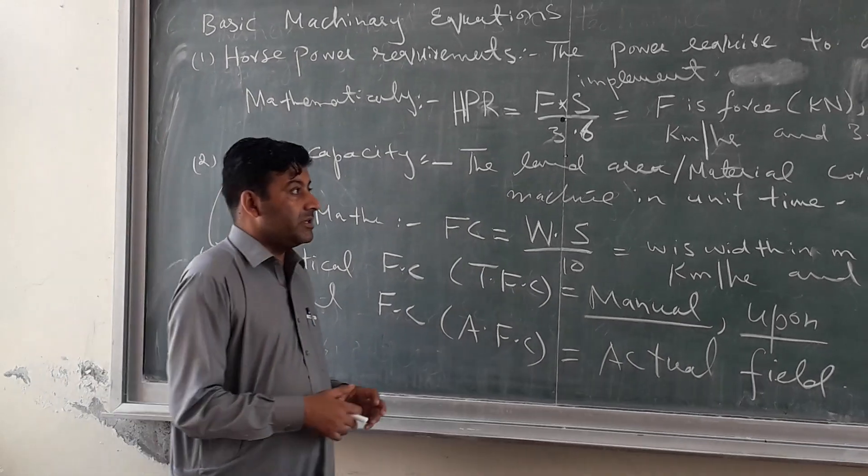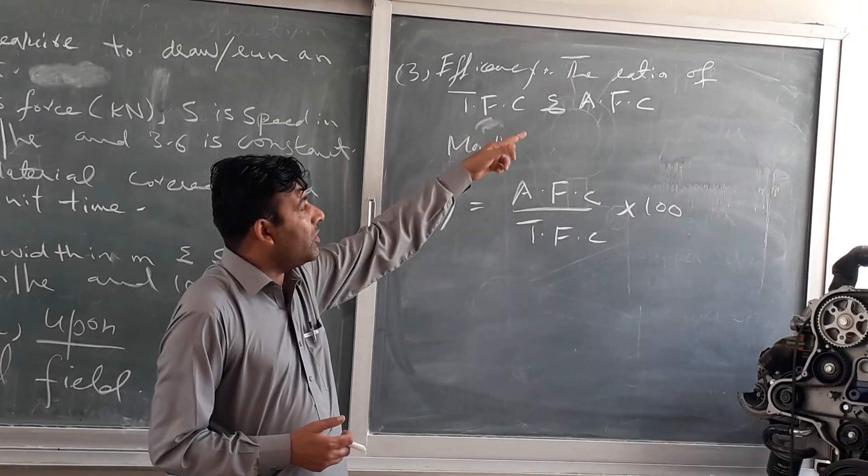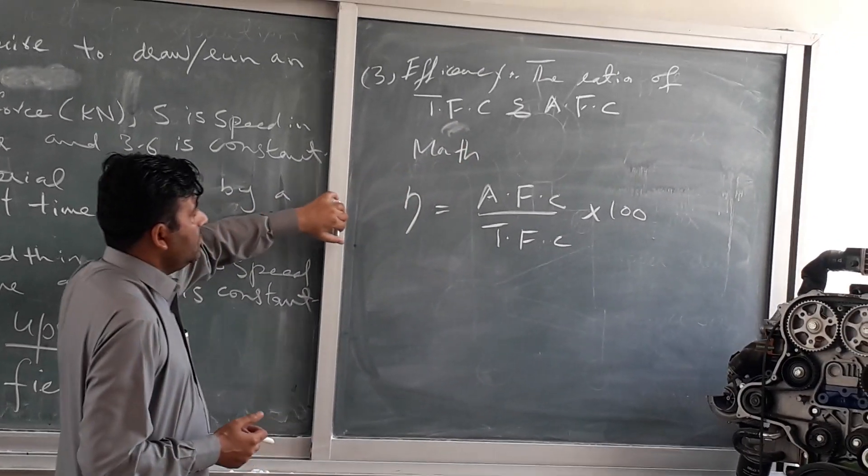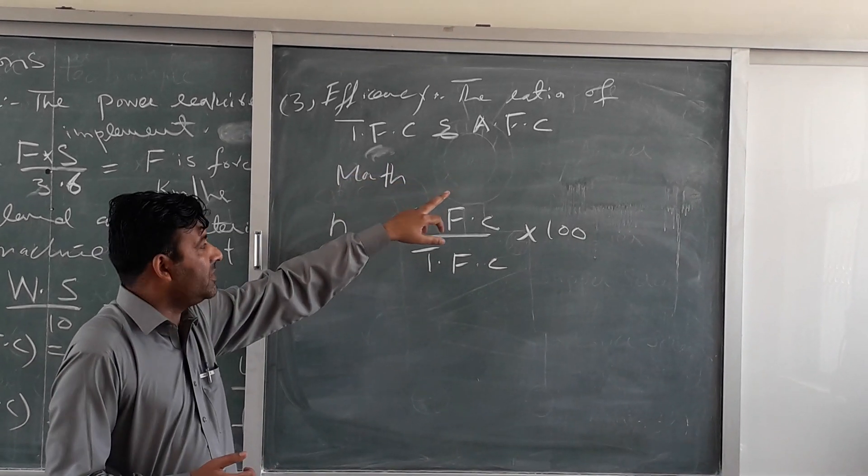The third equation is efficiency of the machine. So what is efficiency? It is actually the ratio of actual field capacity and theoretical field capacity.